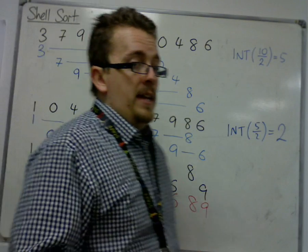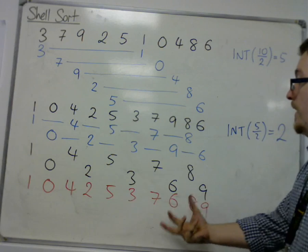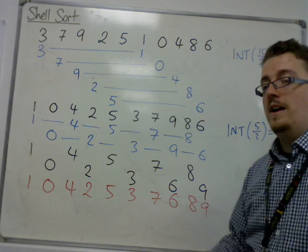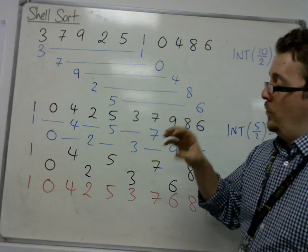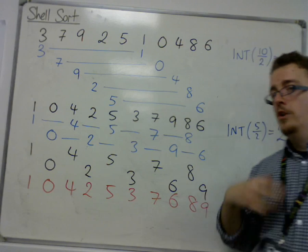And then finally, what we would have is you would then shuttle sort what you have left. The 1, 0, 4, 2, 5, 3, 7, 6, 8, 9. Shell sort that.